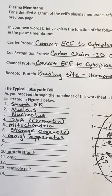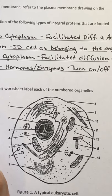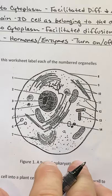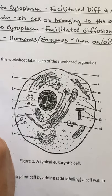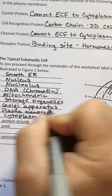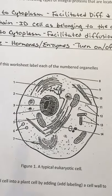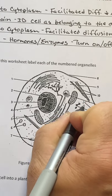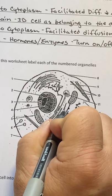Number eight is way up here — that is the structure that surrounds the cell, that's the plasma membrane. Number nine is the water-based fluid on the interior of the cell, so that's the cytoplasm. Number twelve are these little dots — they're actually found in two different areas: they could be out here free in the cytoplasm, but they're also on the surface of this rough endoplasmic reticulum.